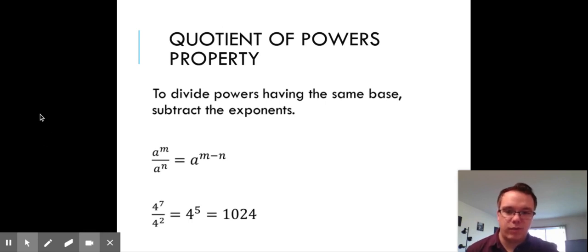So the example here is 4^7 over 4^2. If we subtract our exponents, we get 4^5. If you put 4^5 in the calculator, you get 1024.